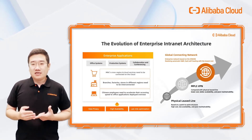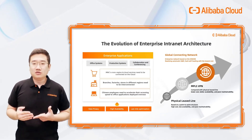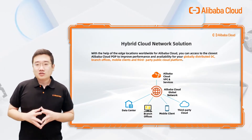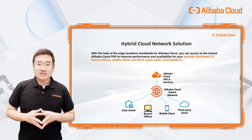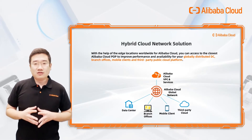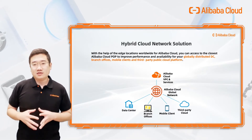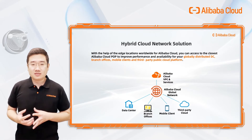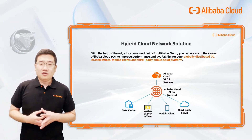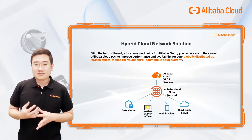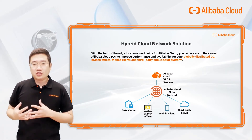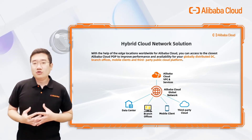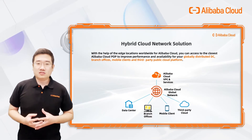Other challenges like network latency and security also need to be considered. So with the help of the worldwide network resources of Alibaba Cloud, you can access the closest Alibaba Cloud POPs to improve network performance, availability, and security for your global distributed DCs, branch offices, mobile clients, and third-party public cloud platforms. You can utilize the Smart Access Gateway to build your own global HQ and branch network by connecting to the nearest POP, providing high-speed connections across multiple regions.